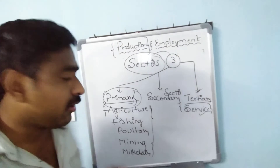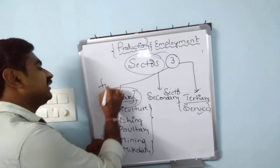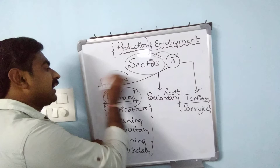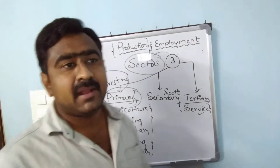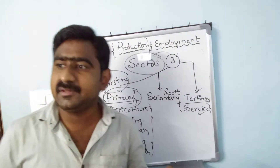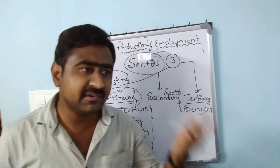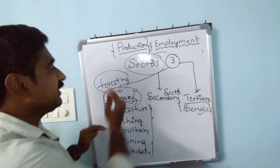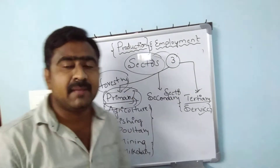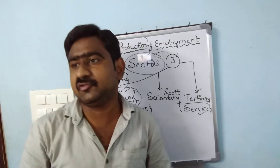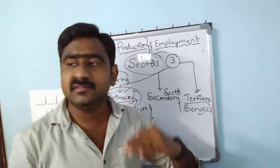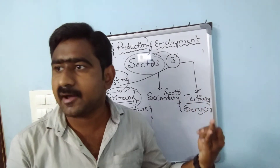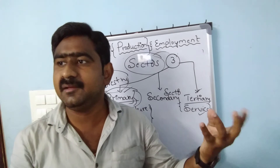One more important activity under the primary sector is forestry. So all these activities — agriculture, fishing, farming, forestry, mining, and milk dairy maintenance — all come under the primary sector. It is a very important question: name some activities that come under the primary sector.